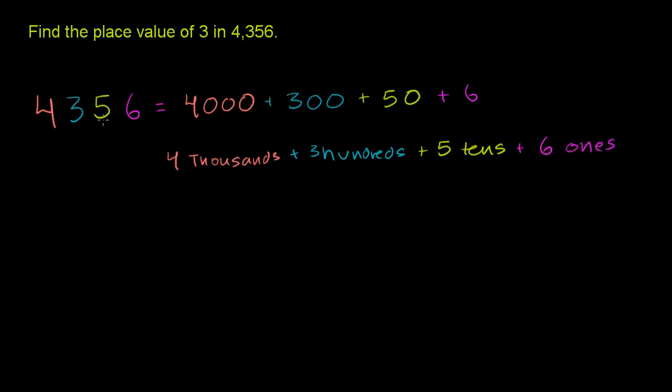And so if we go back to the original number 4,356, this is the same thing as 4 thousands, 3 hundreds, 5 tens, and then 6 ones.